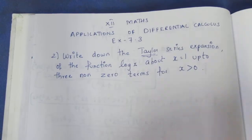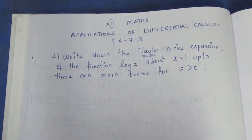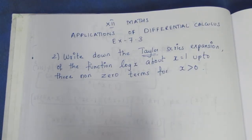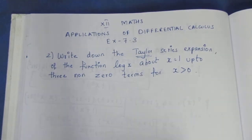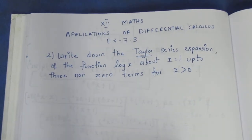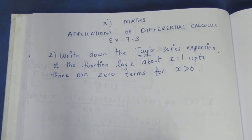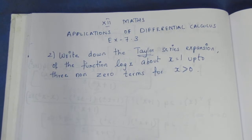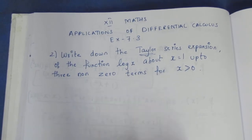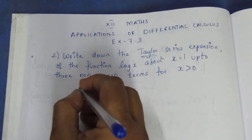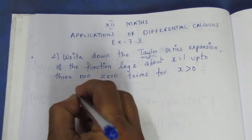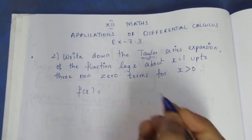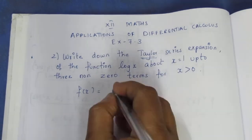What series do we use? We use the Taylor series. If you look at the Maclaurin series versus the Taylor series, the Taylor series is the most important formula. We will make the sum using the formula. F of x is equal to the Taylor series.